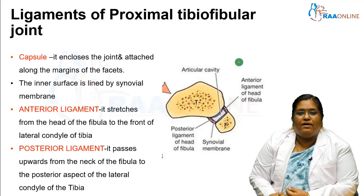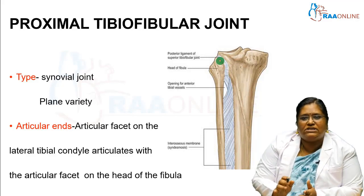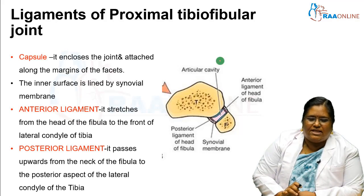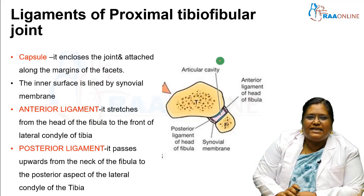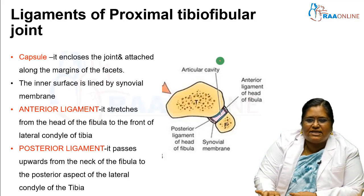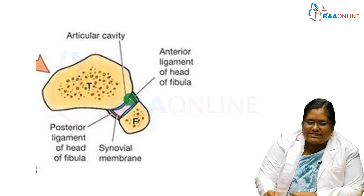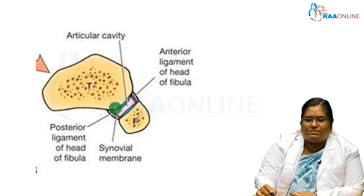Now we have seen the articulating ends and the type of joint. Next, we will see how this joint is maintained in position — the stability of the proximal tibiofibular joint. The first ligament is the capsule, which encloses the joint and is attached along the margins of the facet. The inner surface is lined by the synovial membrane.